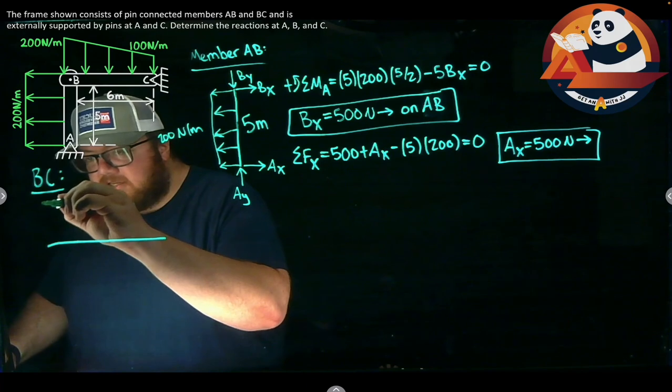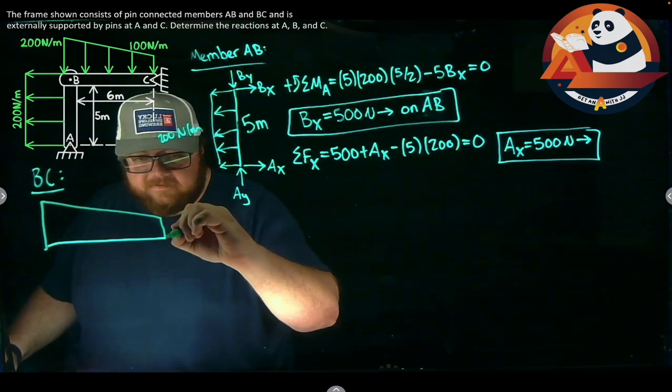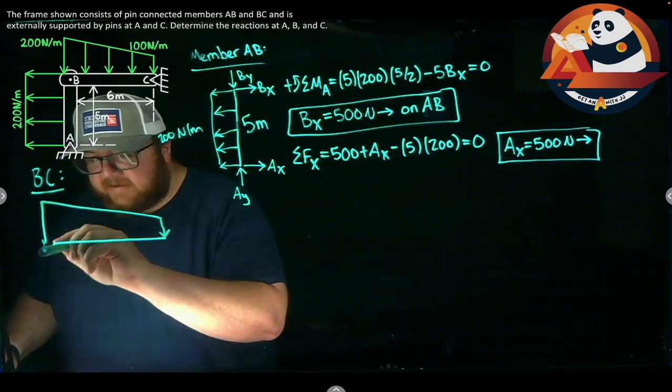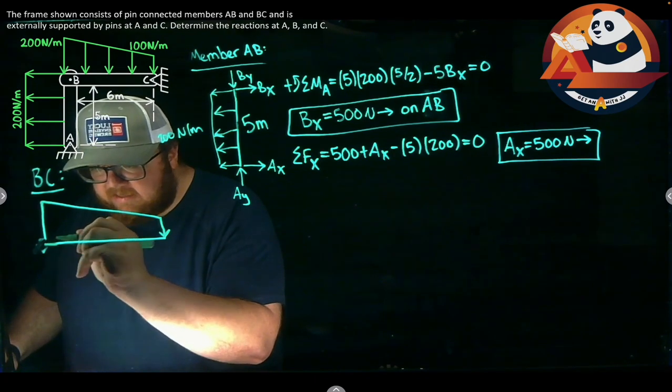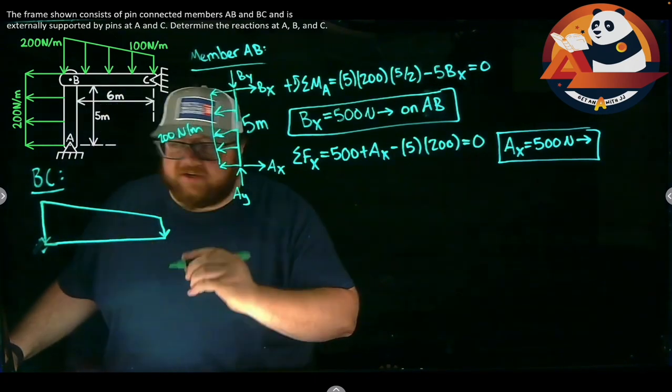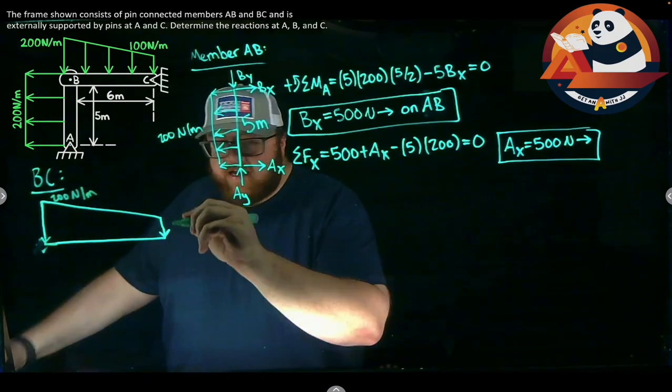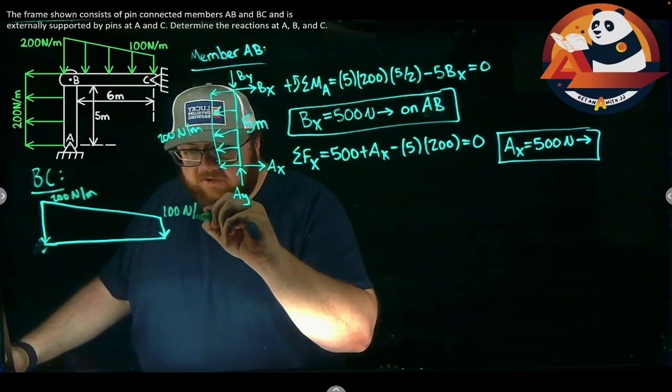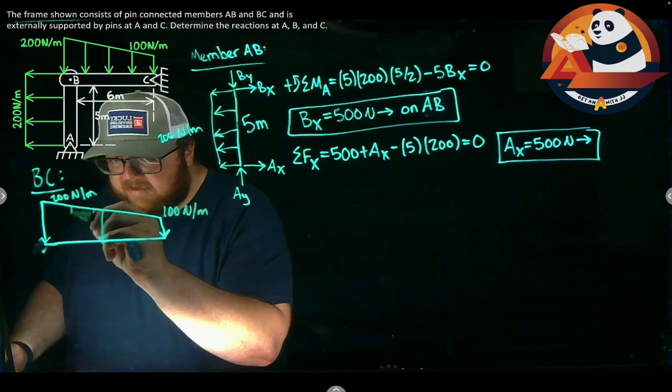So come over on the left and say I'm looking at member BC. BC is just a horizontal line. I know I have a trapezoidal distributed load on here. So we can add that in as well. At the left, it has a height of, let's make that look a little bit nicer. On the left side, our height is 200 newtons per meter. And on the right side, it's 100. 100 newtons per meter. I just need a handful of arrows coming down off of this.